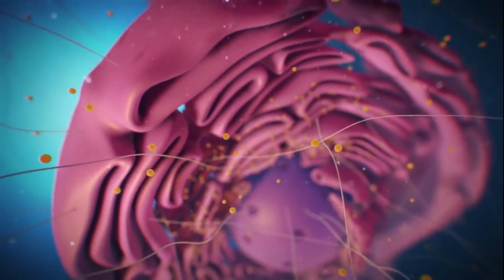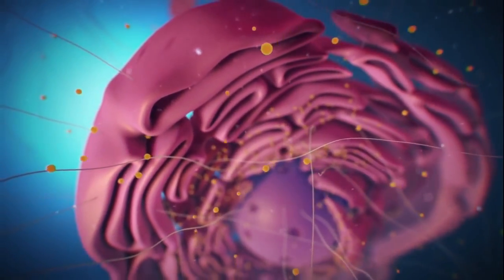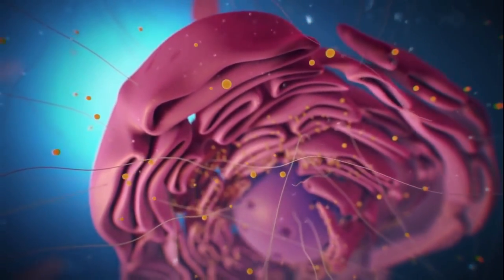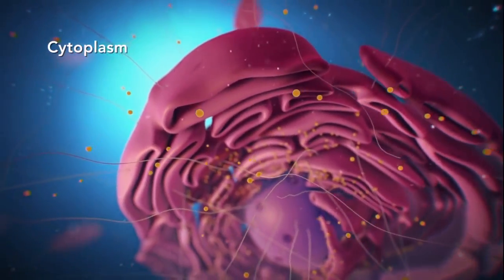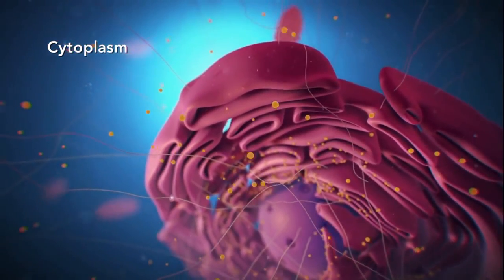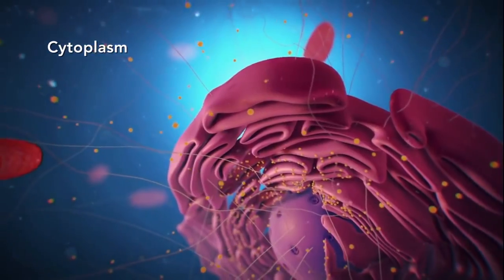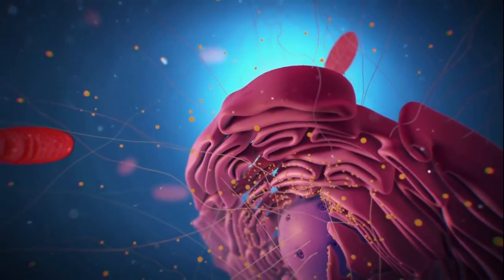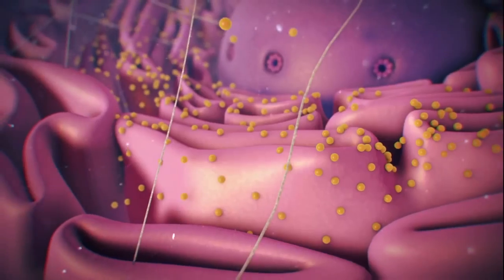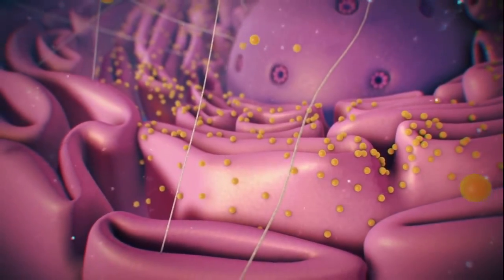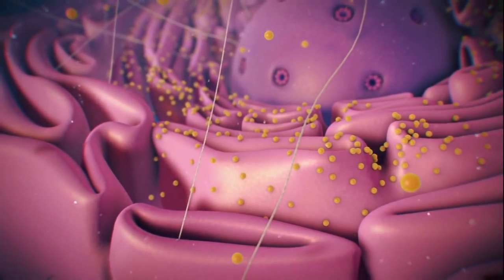Outside the nucleus, the ribosomes and the rest of the organelles float around in cytoplasm, which is the jelly-like substance. Ribosomes may wander freely within the cytoplasm or attach to the endoplasmic reticulum, sometimes abbreviated as ER.